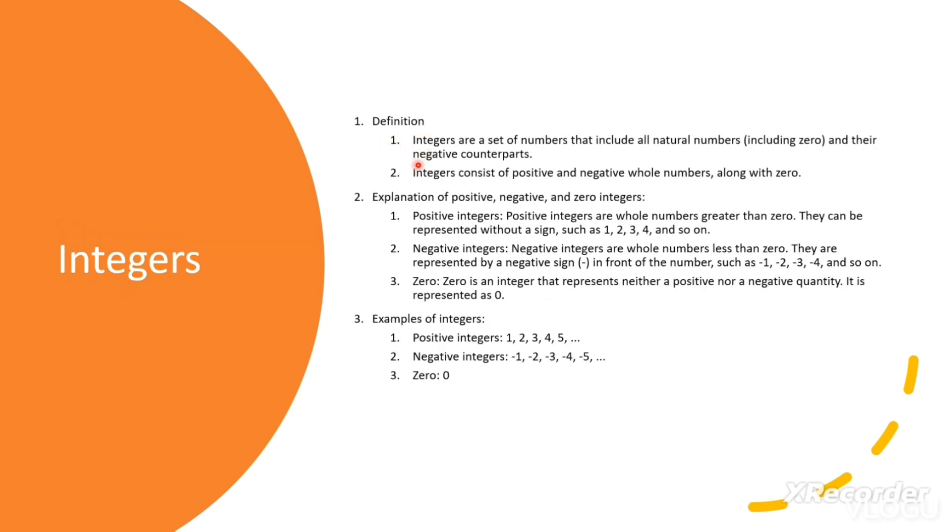Definition of integers. Integers are a set of numbers that include all natural numbers including zero and their negative counterparts. Integers consist of positive and negative whole numbers along with zero.